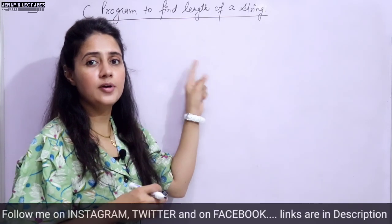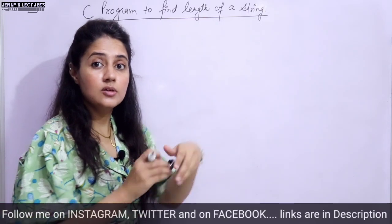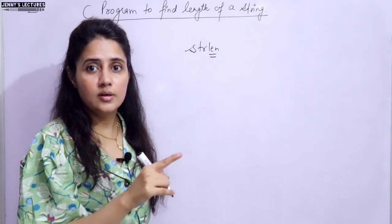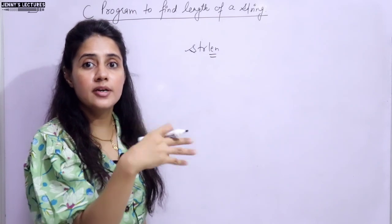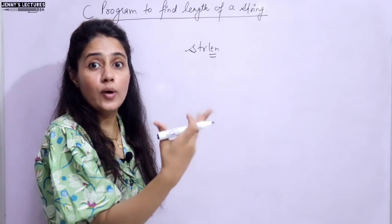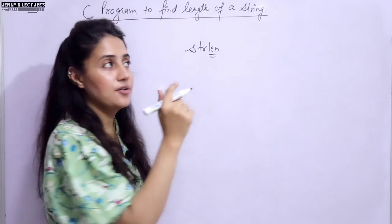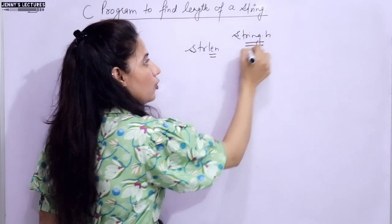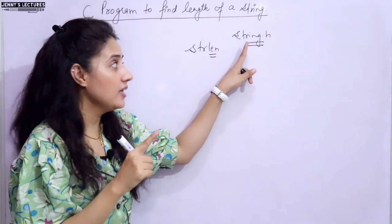We'll use the predefined function strlen to find the length of a string. Predefined means it is already defined - it is defined in the header file string.h. So if you want to use any predefined function regarding strings, we have to include the header file string.h.